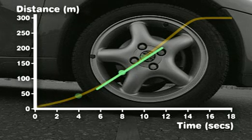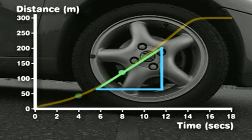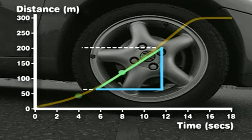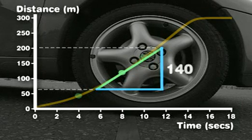To calculate the gradient, we need to divide the distance by the time. In this case, the distance is 200 meters minus 60 meters, which is 140 meters.